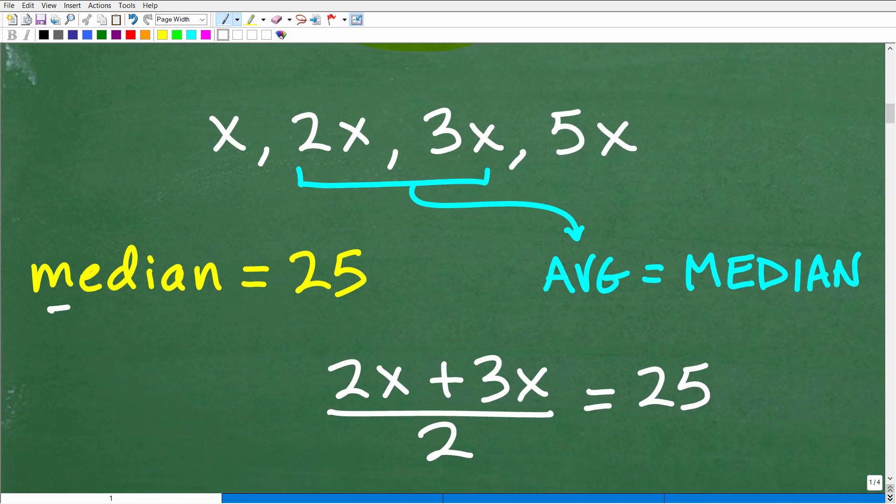Okay, so here, we know that the median is 25, and we have our data here. So what we're going to want to do is order these numbers. And of course, we don't know what the actual values are right now. But we want to order these from least to greatest. We're going to assume that we're dealing with positive values here. So x would be the least number, 2x would be the next number. We're going from lowest to highest. And then we have 3x, and then 5x would be the greatest number.